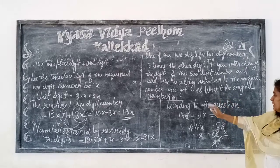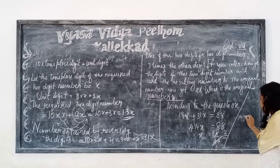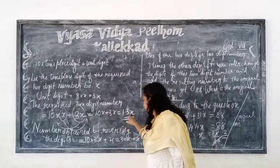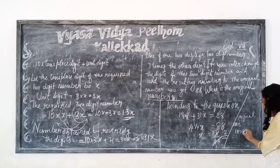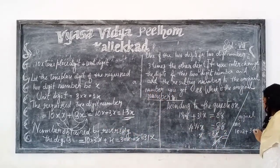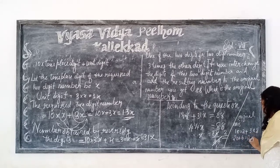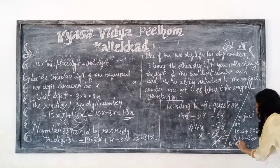What is the original number? The required original number is 10 into x plus 3x. Substituting x equals 2: 10 into 2 plus 3 into 2, which is 20 plus 6, equals 26. So the original number is 26.